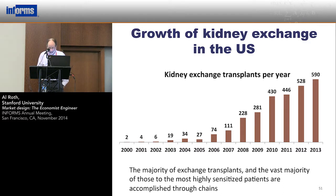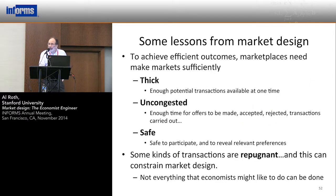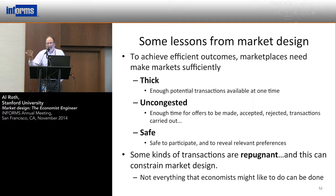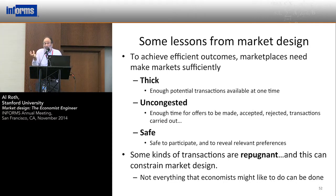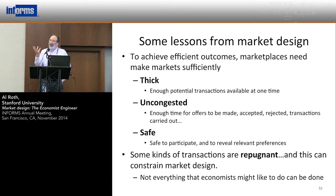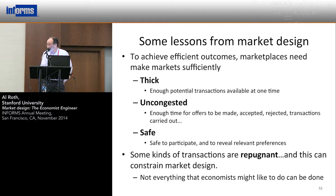The majority of transplants in the U.S. through exchange — now about 10% of living donor transplants — take place in chains, and the vast majority of highly sensitized patients are transplanted in chains. Let me start to come to a conclusion with some general lessons from market design about what marketplaces have to do to make markets work well. They have to make the market thick — for kidney exchange, that meant assembling databases of patient-donor pairs. They have to deal with congestion — in New York City, kids were told by mail which high schools they'd been admitted to and had to respond by return mail. And they have to be safe to participate in — safe for families to report preferences to schools, for doctors to report preferences over jobs, and for transplant centers to enroll all their patients in kidney exchange.